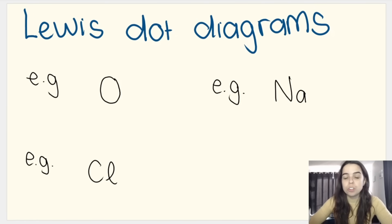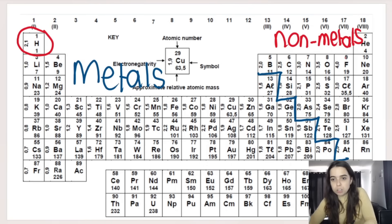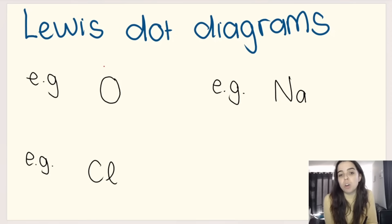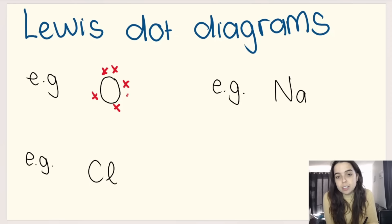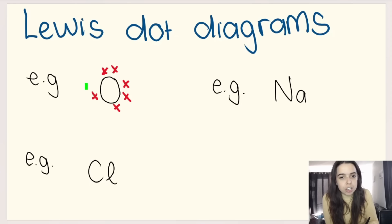If I ask you to draw Lewis dot diagrams for individual elements, here's how it works. For oxygen, using either an Aufbau diagram or the periodic table, we see it has six valence electrons. We draw six dots or crosses around the oxygen symbol — one on each side, going around until we've placed all six. An atom has space for eight total, which means oxygen has two open spaces — it needs eight electrons in its outer energy level to be full but only has six. For sodium, which is in group one, it has one valence electron, so we draw just one dot or cross.